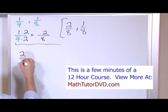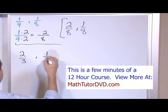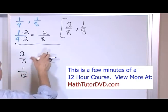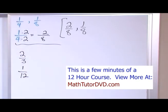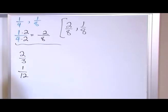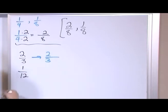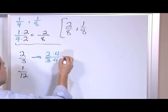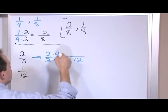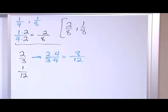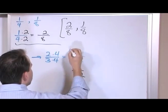What about two-thirds and one-twelfth? I want to find a common denominator between these two fractions. I know right away that I can take three and multiply by four to give me twelve. So with two-thirds, I can multiply by four on the top and the bottom — three times four is twelve, two times four is eight. So eight-twelfths is exactly the same as the fraction two-thirds. The two fractions I started with were eight-twelfths and one-twelfth.